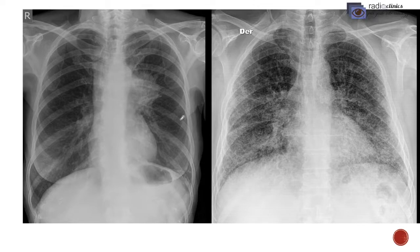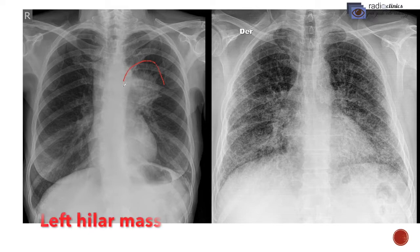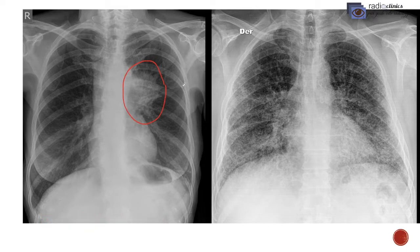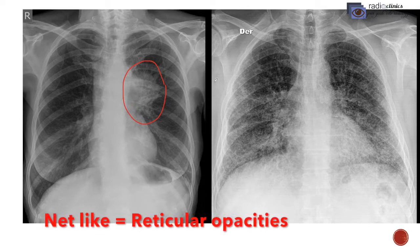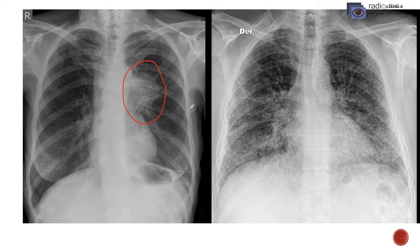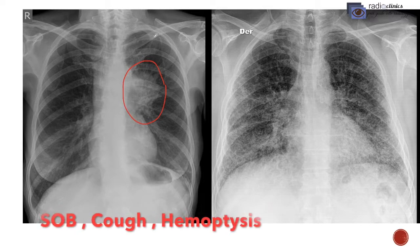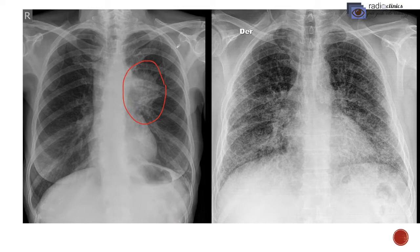Look at these two X-rays. In the first X-ray, you can see there is presence of a mass in the left hilar region. In the second X-ray, you can see net-like opacities in both lungs. Both these patients presented with shortness of breath and cough, and the first patient presented with hemoptysis.